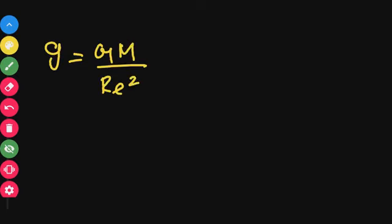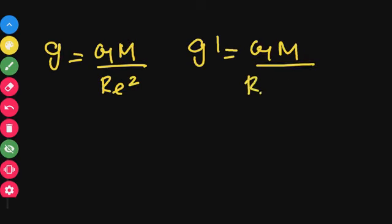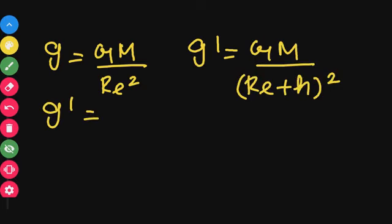But when there is a height H above the surface, that gives us a new acceleration due to gravity g'. So g' = GM divided by (Re + H)², because the distance from the center of the Earth becomes Re plus H. We take Re² as a common value from the denominator.